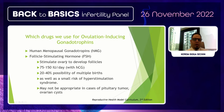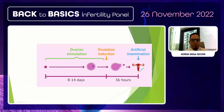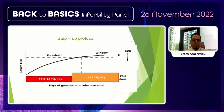For gonadotropins in polycystic ovary and other patients with unexplained infertility, we typically use 75 or 150 international units per day. There is a risk of multiple births. Step-up protocols are mostly used: starting at the initial dose and after one week, if there is no follicular movement, stepping up the dose incrementally.